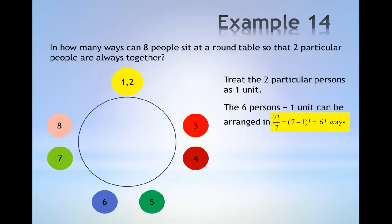Arranging these seven units will give us seven factorial permutations of arrangement.